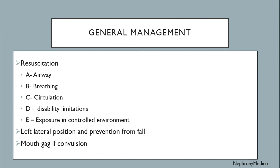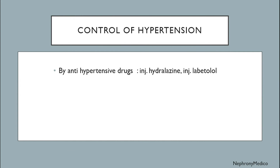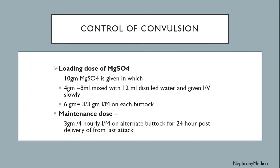Control of hypertension uses antihypertensive drugs such as injection hydralazine or injection labetalol. Control of convulsions begins with a loading dose of magnesium sulfate (MgSO4): 10 grams total — 4 grams (equal to 8 ml) mixed with 2 ml distilled water given intravenously slowly.